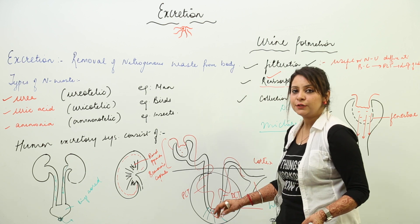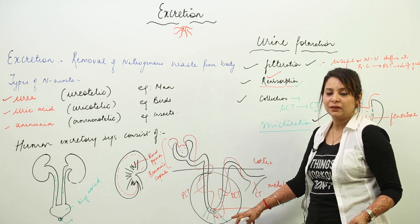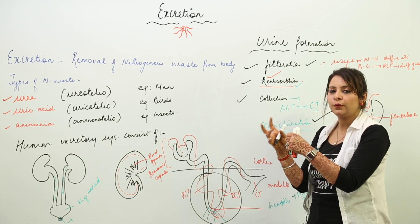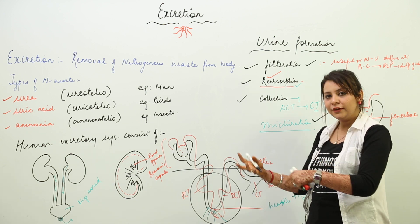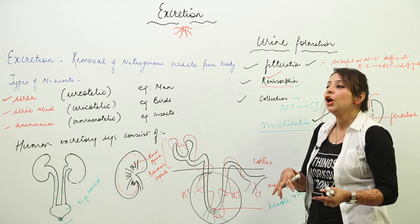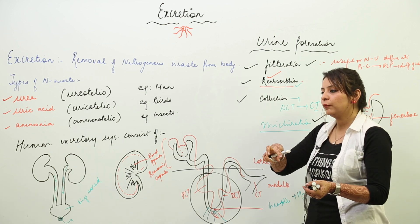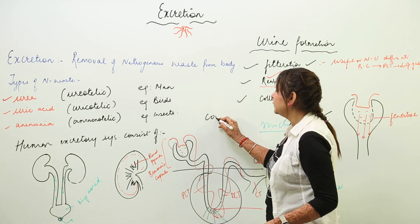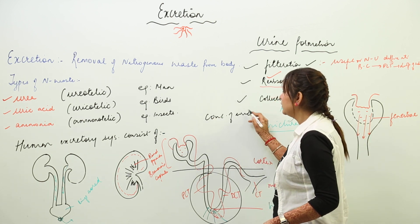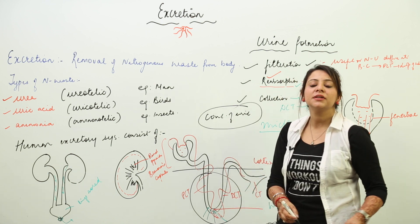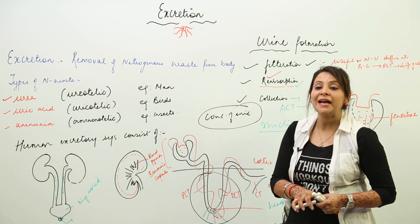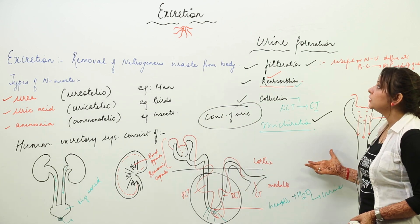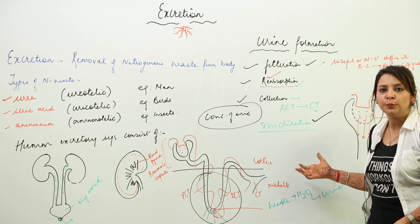The main function of the loop of Henle is concentrating the urine — it decides what amount of water should be in the urine and what amount of waste should be present. The loop of Henle helps in the concentration of urine; this U-shaped structure decides whether the urine is going to be dilute or concentrated.